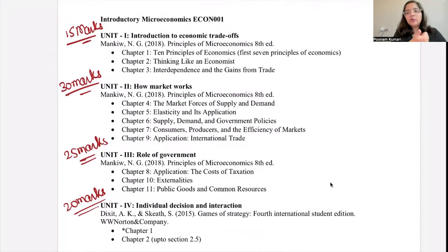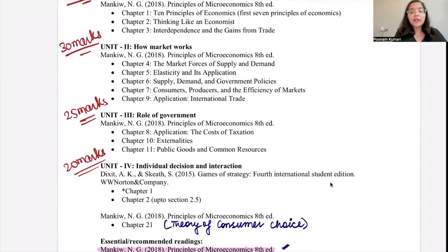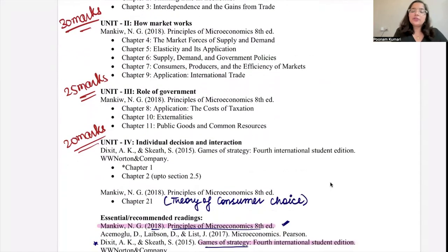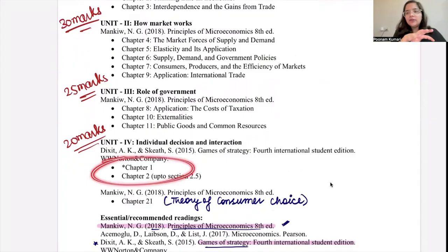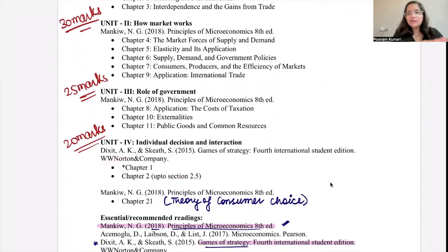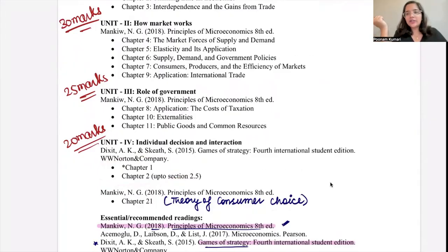So these are the 4 units: Unit 1 — introduction, Unit 2 — how markets work, Unit 3 — the role of government, and Unit 4 — individual decisions and interactions, which includes an introduction to game theory and consumer theory (Theory of Consumer Choice from Mankiw). Your two main readings are Principles of Microeconomics by Mankiw and Games of Strategy by Avinash Dixit and others.